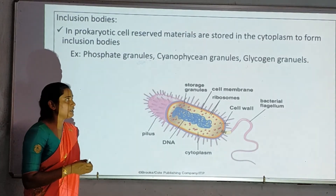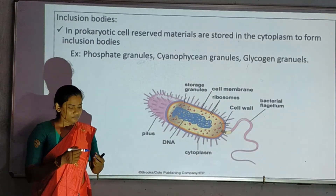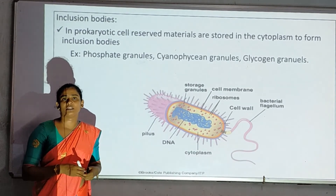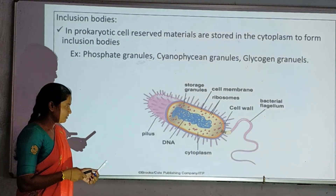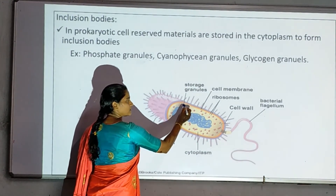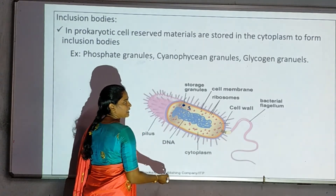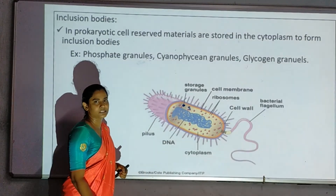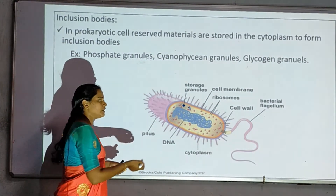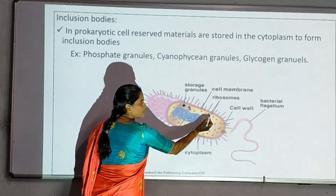Next, inclusion bodies. In the cytoplasm, granules are present in the form of inclusion bodies. These store reserve material in the cytoplasm. The stored material acts as a reserve. These granules are called inclusion bodies and are present in the cytoplasm.